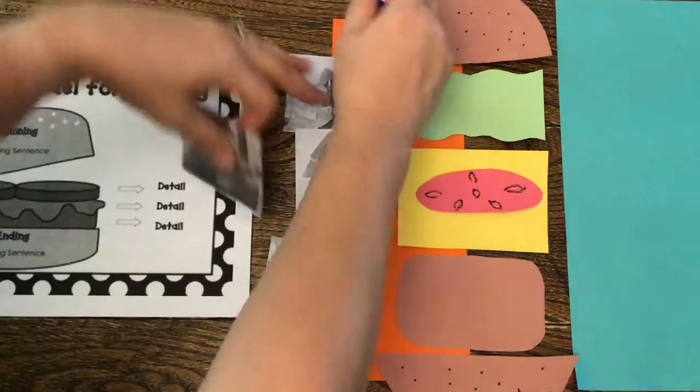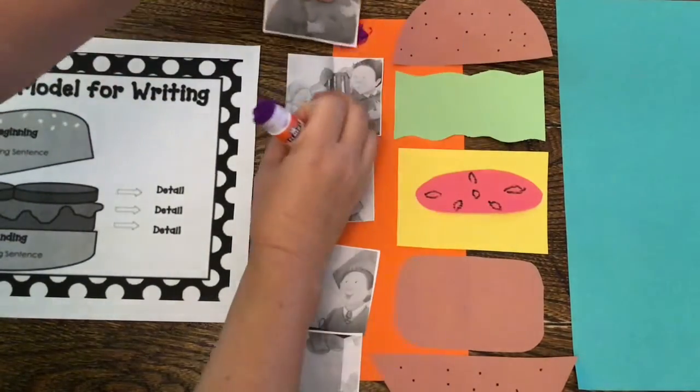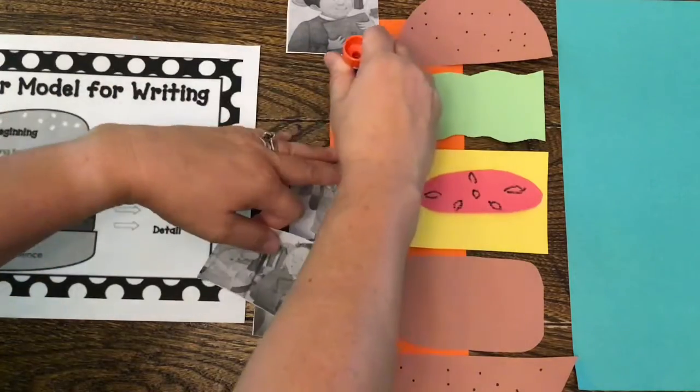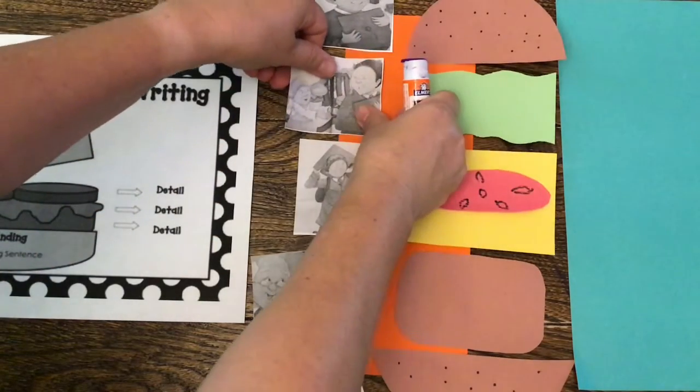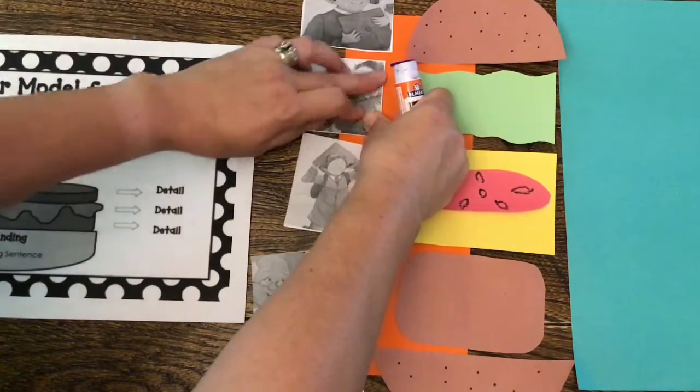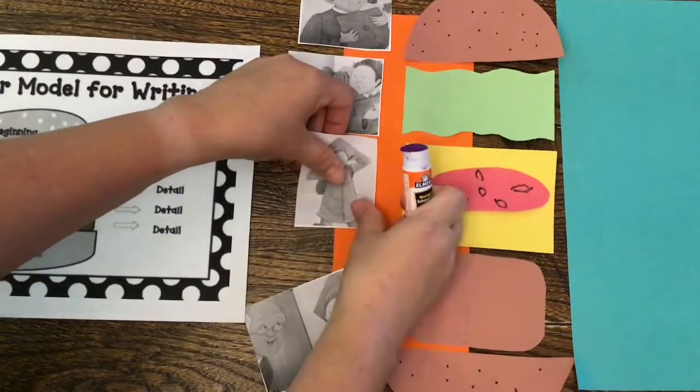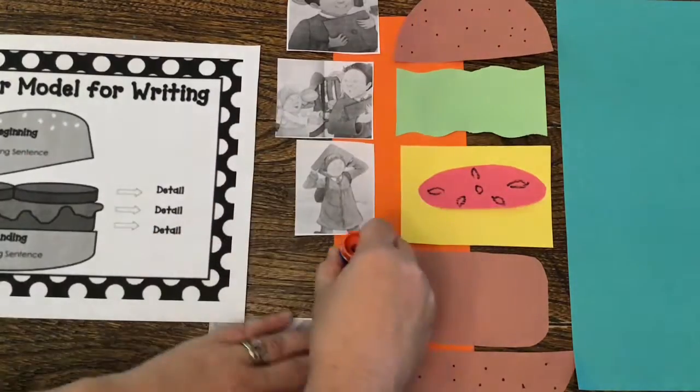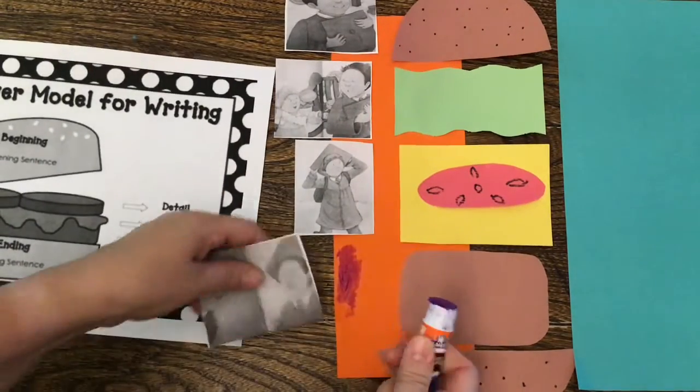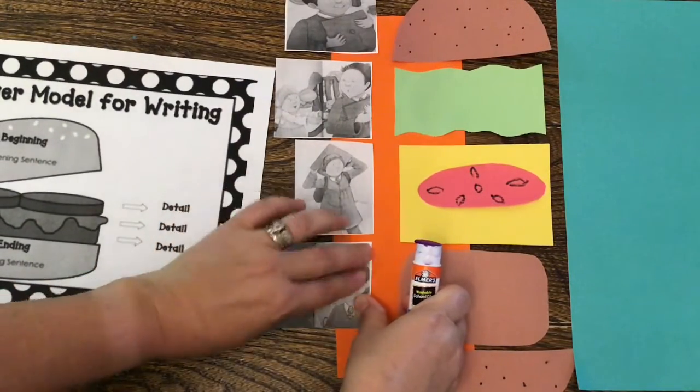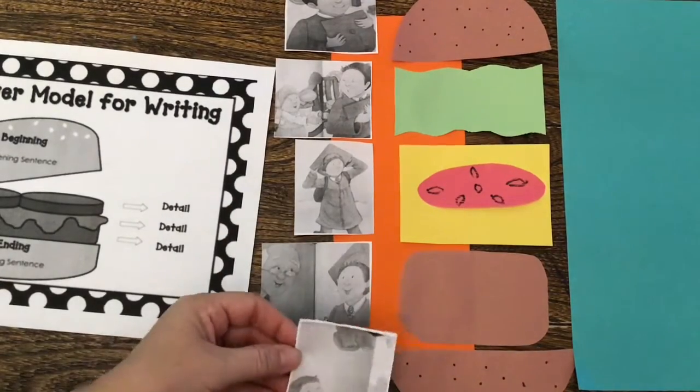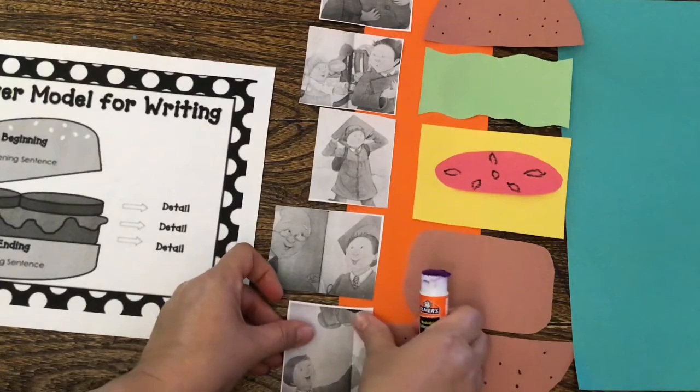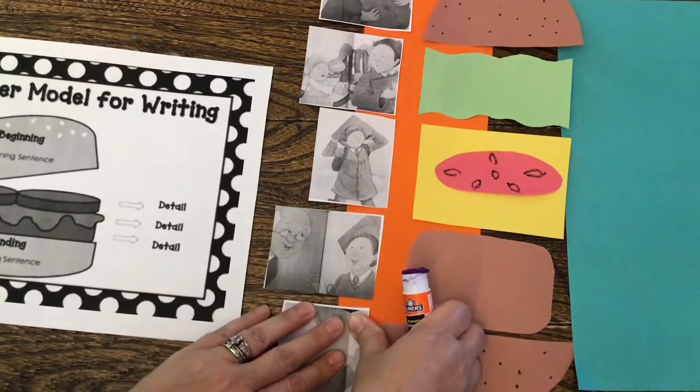I'm only going to glue the top little corner of this because that's the part that touches my orange card. This part touches right there. This part touches right there. This part touches right there. This part touches right here. You can ask for help from your mommy or your daddy on this part. This gets a little tricky.